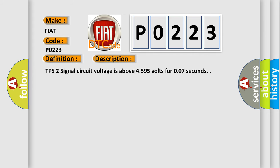TPS2 signal circuit voltage is above 4.595 volts for 0.07 seconds. This diagnostic error occurs most often in these cases.